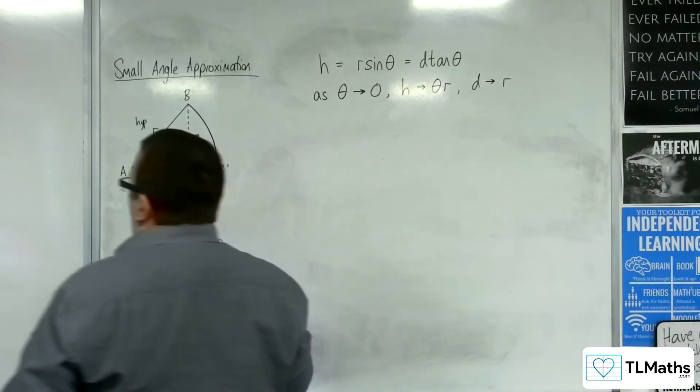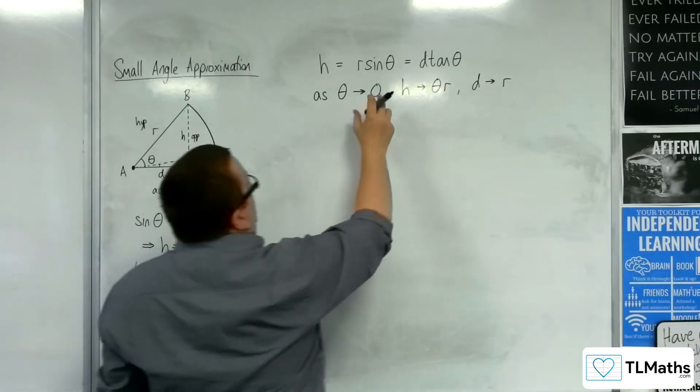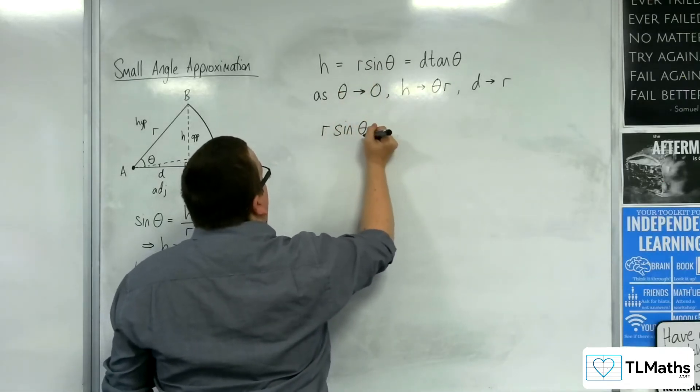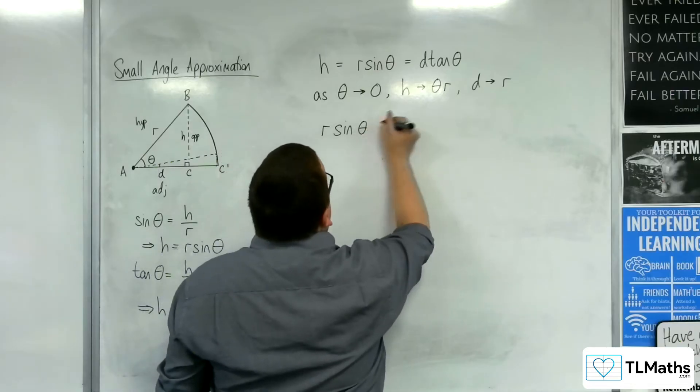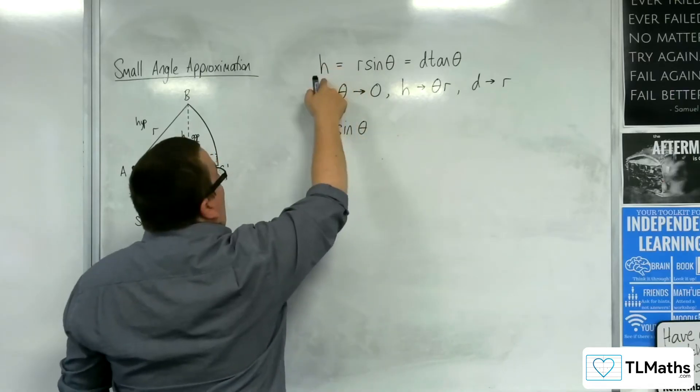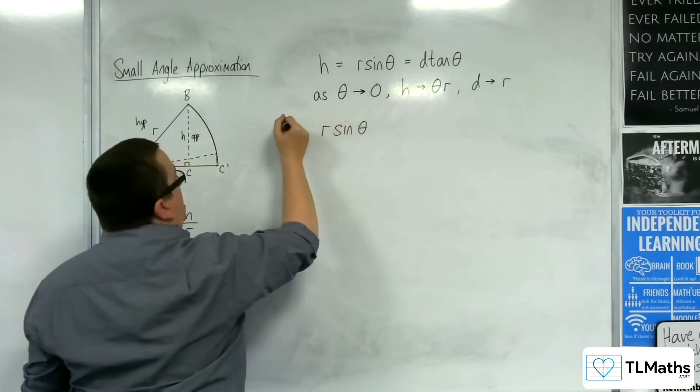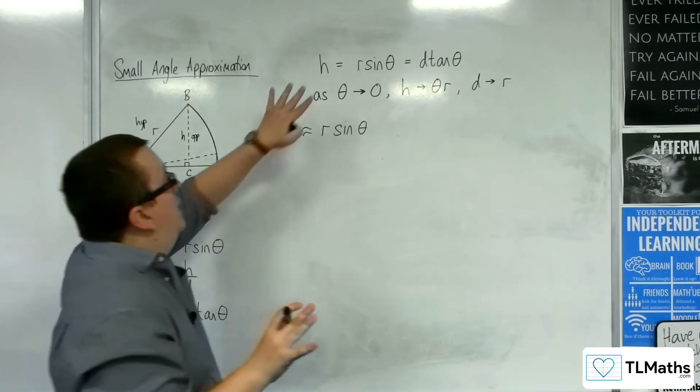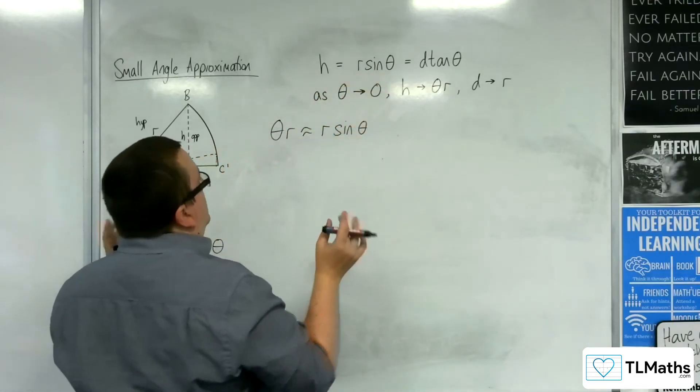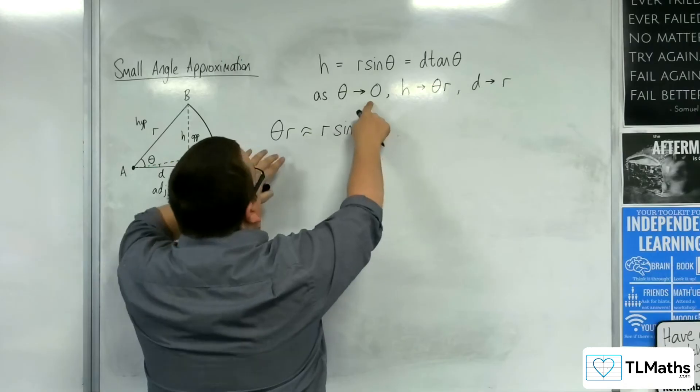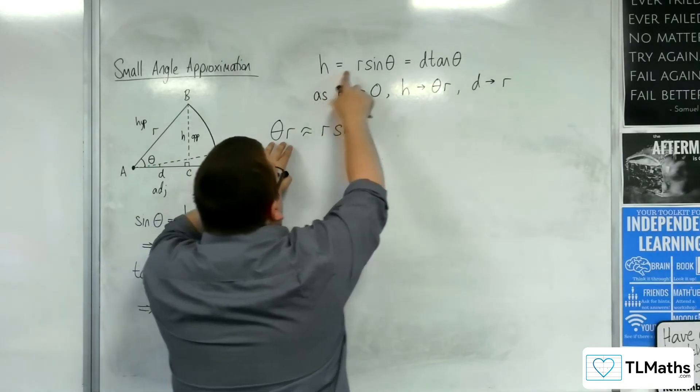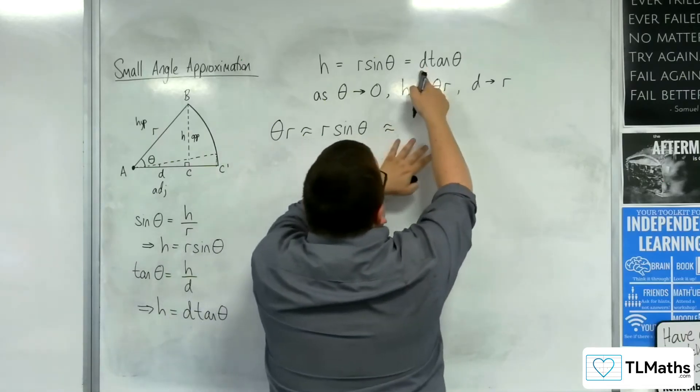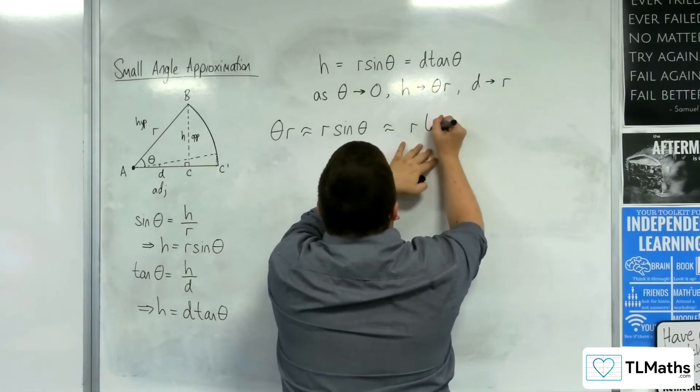So what does that mean? Well we've got the R sine theta, and what I'm saying is that the H is approaching theta R. So that means that theta R will be approximately the R sine theta when theta is small. So as theta tends to 0, H is tending to that. R sine theta is R sine theta. And the D tan theta is approaching R tan theta.